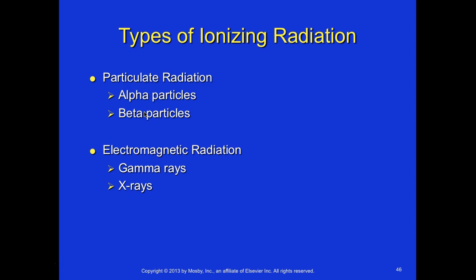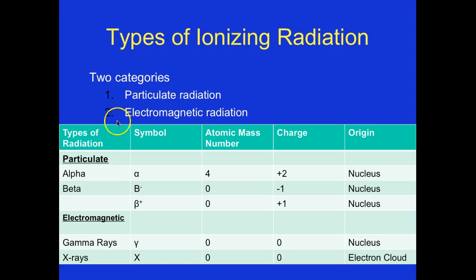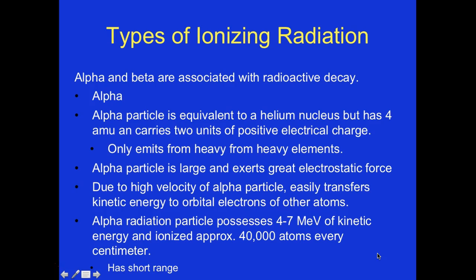Types of ionizing radiation: we have particulate radiation — alpha and beta — and electromagnetic radiation — gamma and x-rays. For particulate radiation: alpha has an atomic mass of 4, a charge of +2, and originates in the nucleus; beta has a mass of 0 and charges of −1 (negative) or +1 (positive), also originating in the nucleus. For electromagnetic radiation, gamma rays and x-rays both have zero mass and zero charge — gamma originates in the nucleus, and x-rays originate in the electron cloud.